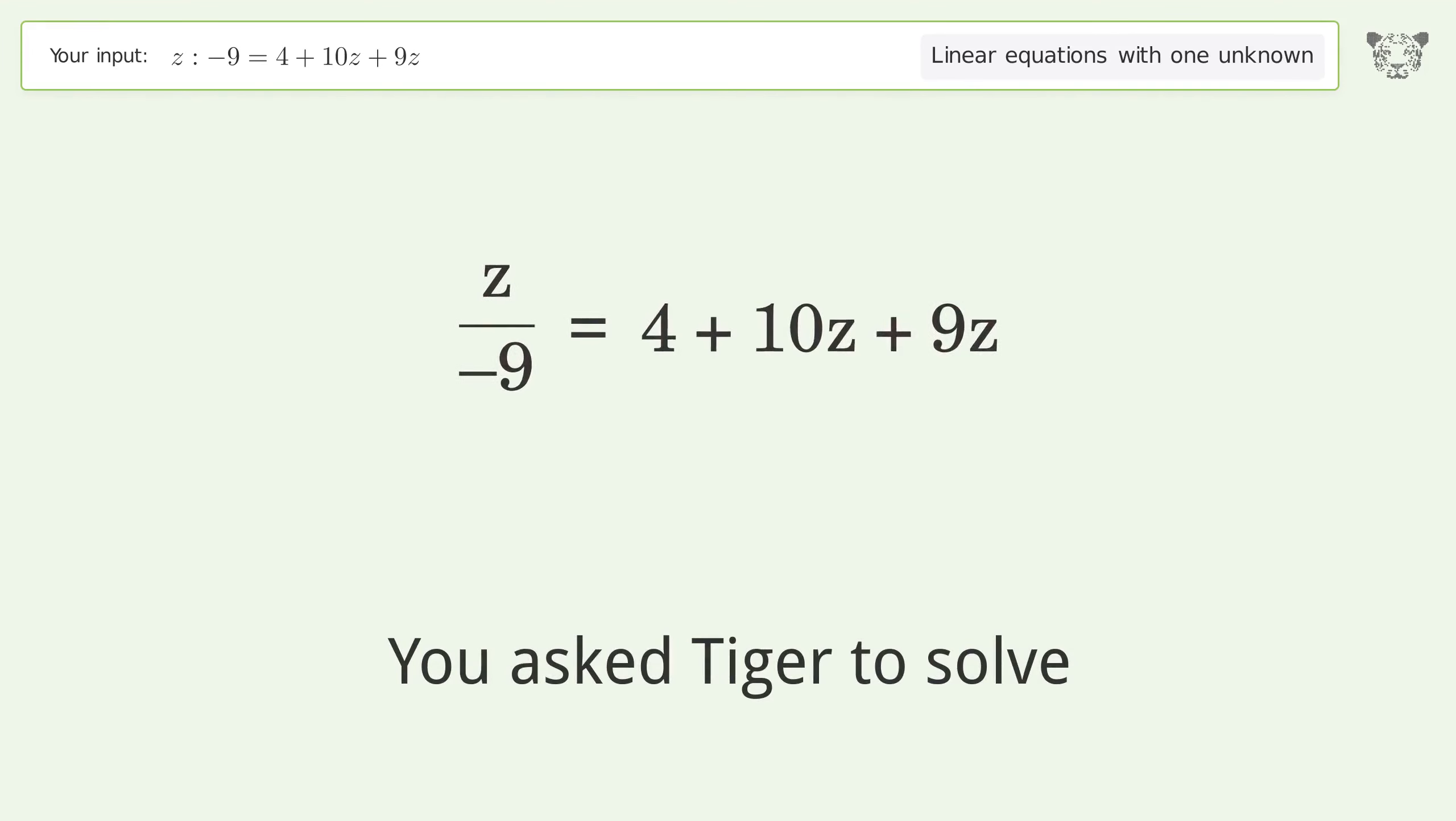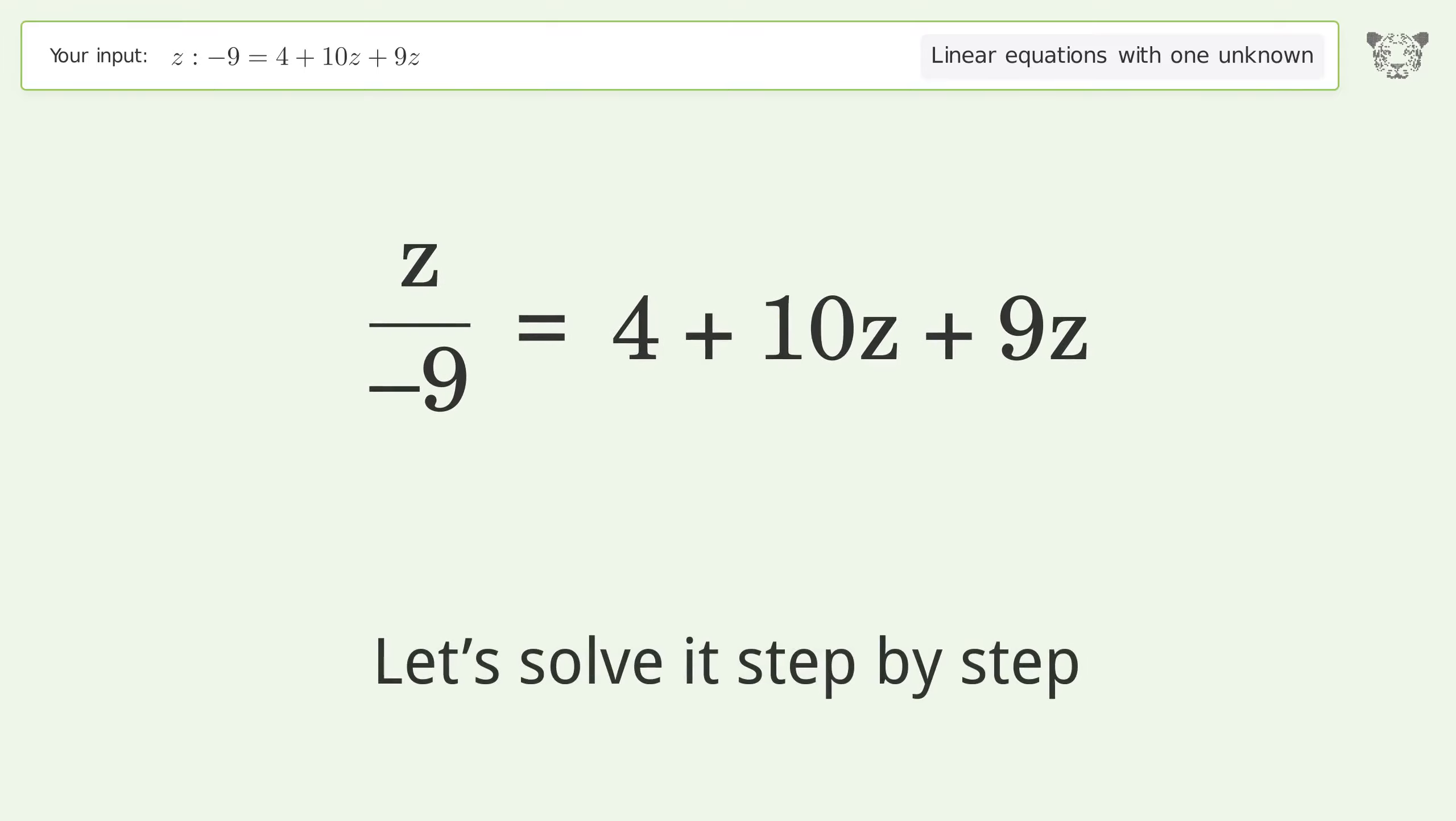You asked Tiger to solve this. This deals with linear equations with one unknown. The final result is z equals negative 9 over 43. Let's solve it step by step.